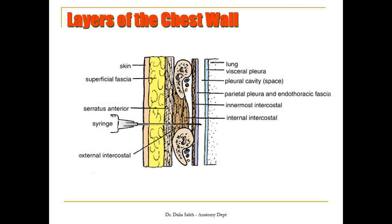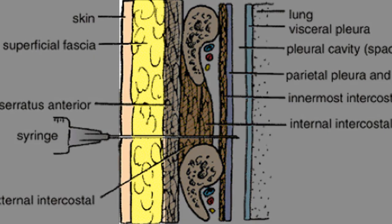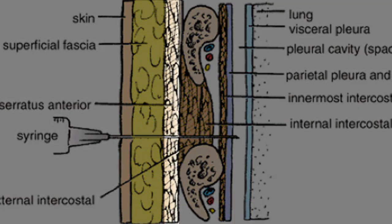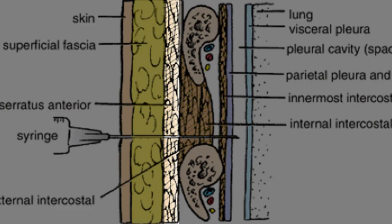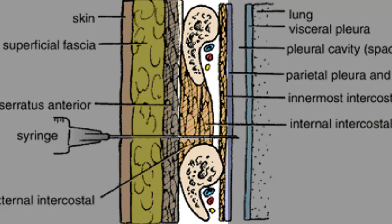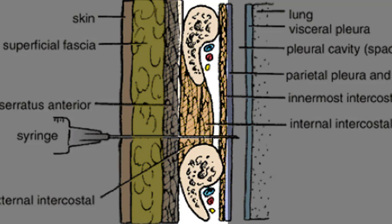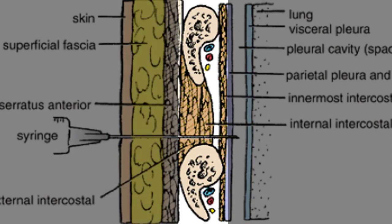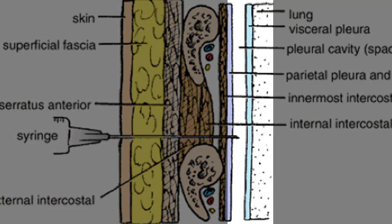What are the layers penetrated by a needle inserted into one of the intercostal spaces? From outer to inner we have the skin, then the superficial fascia, then the muscles at the outer surface of the thoracic wall like the serratus anterior, then the external intercostal muscle, the internal intercostal muscle, and the innermost intercostal muscle — which crosses more than one space and is separated from the internal intercostal by the neurovascular bundle. These muscles are lined by the parietal pleura and the endothoracic fascia, then we have the pleural cavity or pleural space, then the visceral pleura, then the lung tissue.